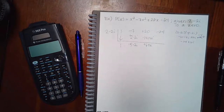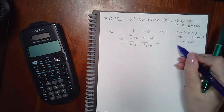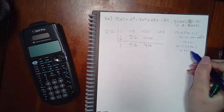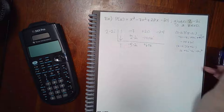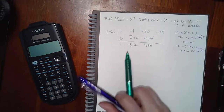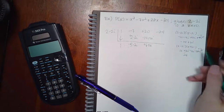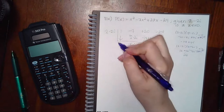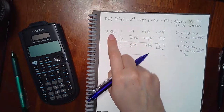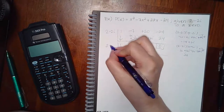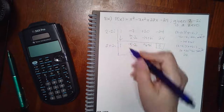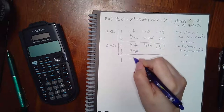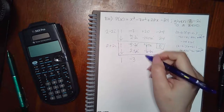Combining gives positive 6 plus 6i. We multiply 2 minus 2i times 6 plus 6i to get 12, positive 12i, negative 12i, and negative 12i squared — which becomes positive 12 — giving positive 24. Those imaginary parts cancel, and we get a remainder of zero. By the conjugate zeros theorem, if this complex zero exists, so does its conjugate. Running synthetic division with the conjugate, combining through each step, we again get zero.